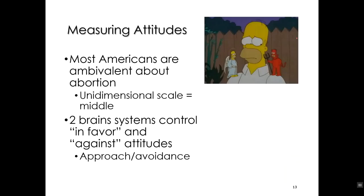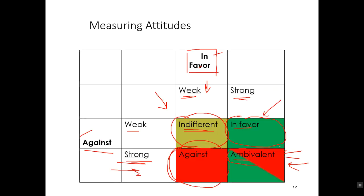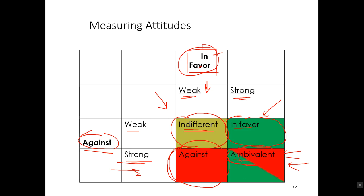A great way to visualize ambivalence is Homer Simpson with the angel on one shoulder and the devil on the other — poor Homer doesn't know who to believe. That really is a good visual image of ambivalence. As I said, most Americans are ambivalent about abortion. On a unidimensional scale they show up in the middle, but on a bidimensional scale they show up strongly at both ends — both strongly against and strongly in favor. They have attitude ambivalence.